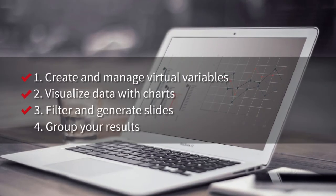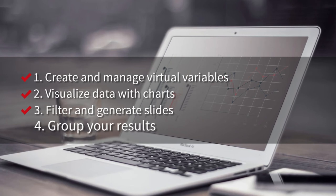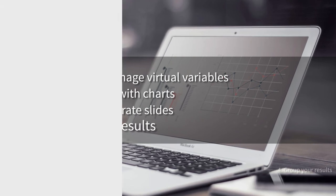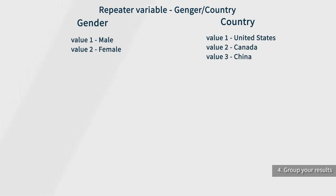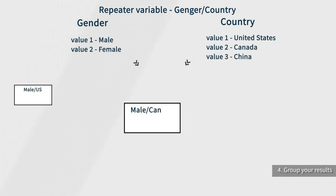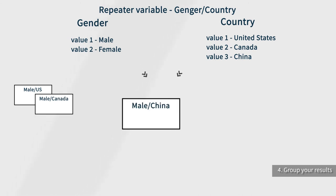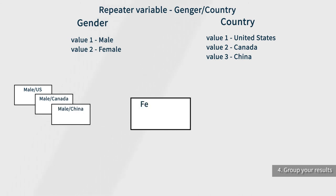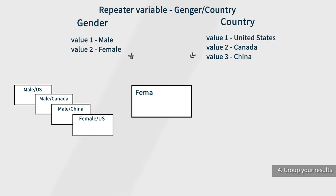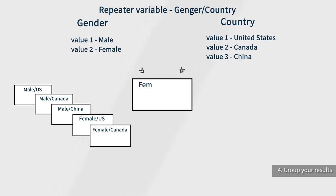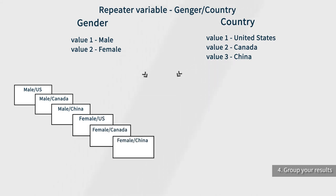Now, as you are done with the creation of your basic template, you may start grouping your results. You may group the current slide with the previous one if they both have the same repeater categories. Simply click the Group with Previous button and all the analysis structure of the previous and current slides will be first generated for the first value of the repeater variable, and after it, the slides will be generated for the next category. This function allows you to review your analysis results more properly.